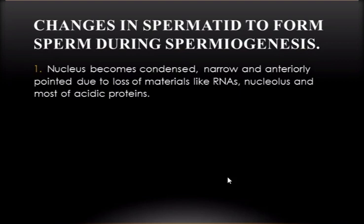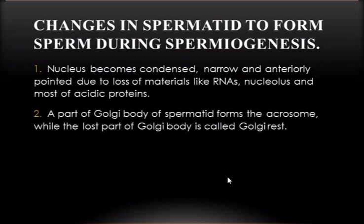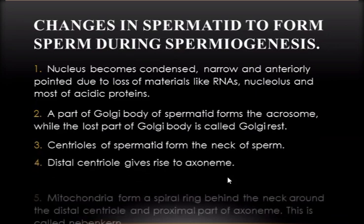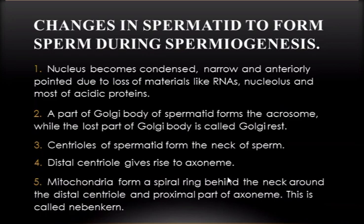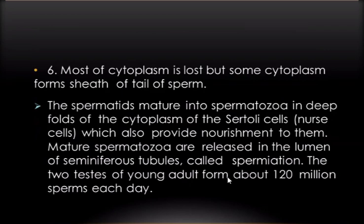First, the nucleus becomes condensed, narrow, and anteriorly pointed due to loss of material like RNA, nucleolus, and most acidic proteins. Second, part of the Golgi body of the spermatid forms the acrosome, while the lost part of the Golgi body is called the Golgi rest. The centriole of the spermatid forms the neck of the sperm, and the distal centriole gives rise to the axoneme. Mitochondria form a spiral ring behind the neck around the distal centriole and proximal part of the axoneme — this is called the nebenkern. Most cytoplasm is lost, but some cytoplasm forms the sheath of the tail. The spermatids mature into spermatozoa in deep folds of the cytoplasm of Sertoli cells, which also provide nourishment. Mature spermatozoa are released into the lumen of the seminiferous tubules in a process called spermiation. The two testes of a young adult produce about 120 million sperm each day.